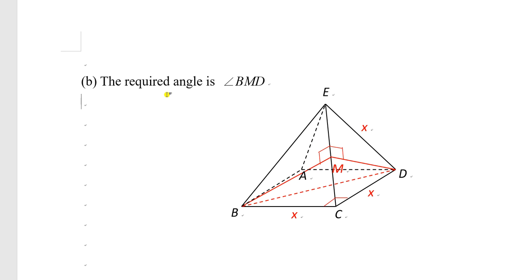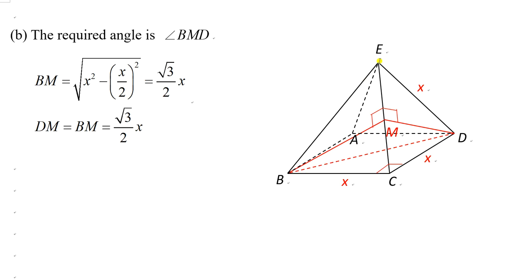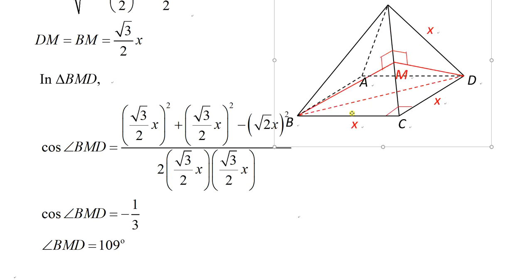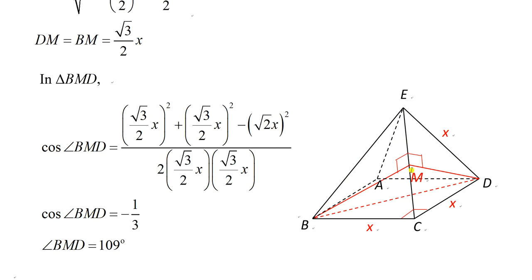To find BM: it is the height of an equilateral triangle, so BM = √(BC² − MC²) = √(x² − (x/2)²) = (√3/2) · x. Similarly, DM = BM = (√3/2) · x, since both are heights of congruent equilateral triangles. Also BD = √2 · x. Using the cosine rule: cos(angle BMD) = (BM² + MD² − BD²) / (2 · BM · MD).